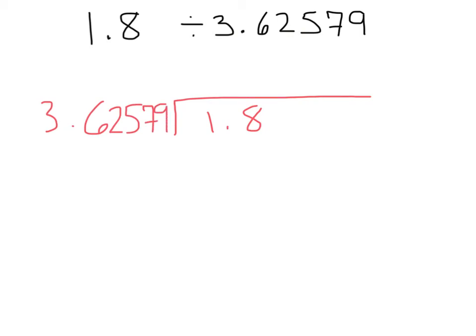First off, we need to move this decimal until it makes this whole thing a whole number. So let's count how many spaces. We have 1, 2, 3, 4, 5. So we're moving this over 5 spaces. That means we're also going to have to move this over 5 spaces. So if we have 1, 2, and remember we need to add a 0 every time after, 3, 4, and 5. And we add another 0, and our decimal is way out here.